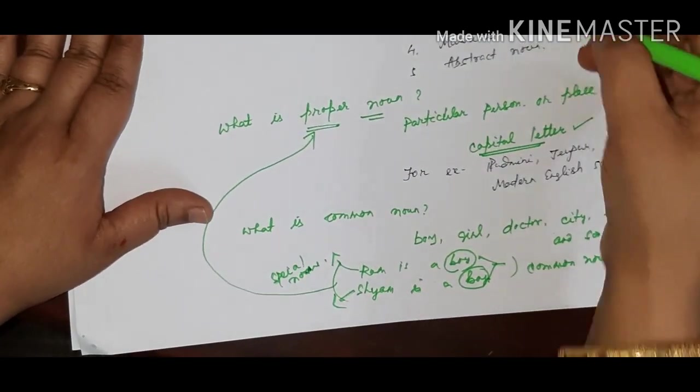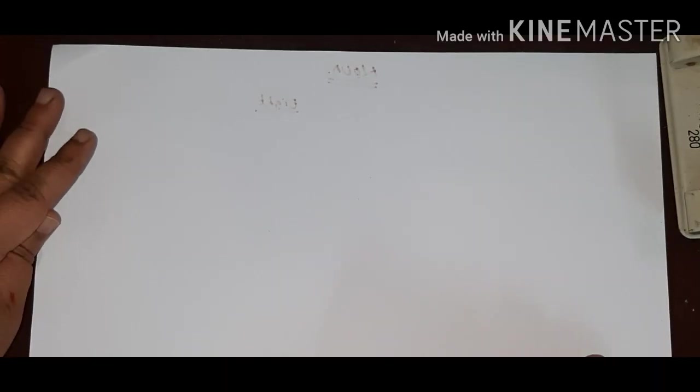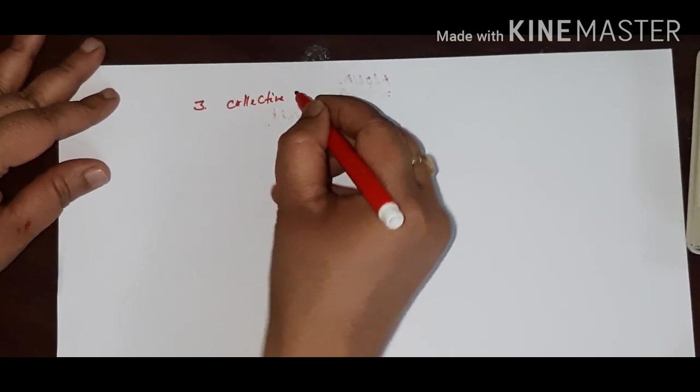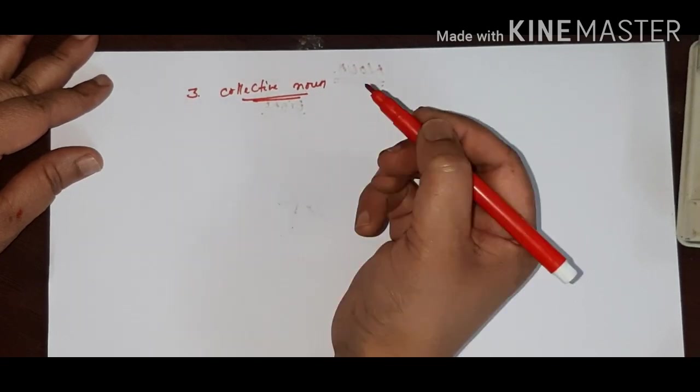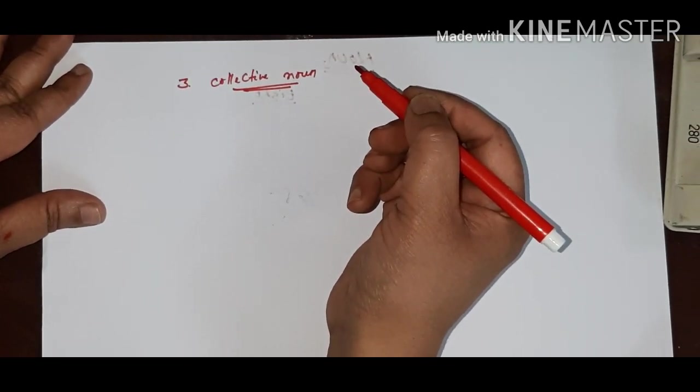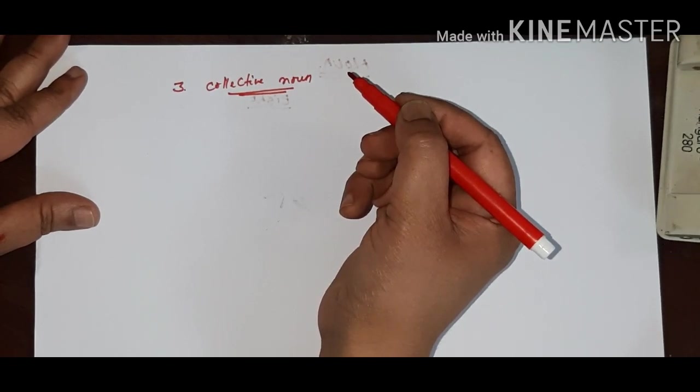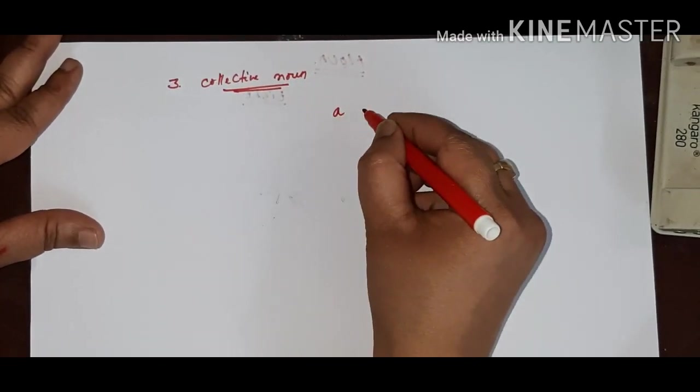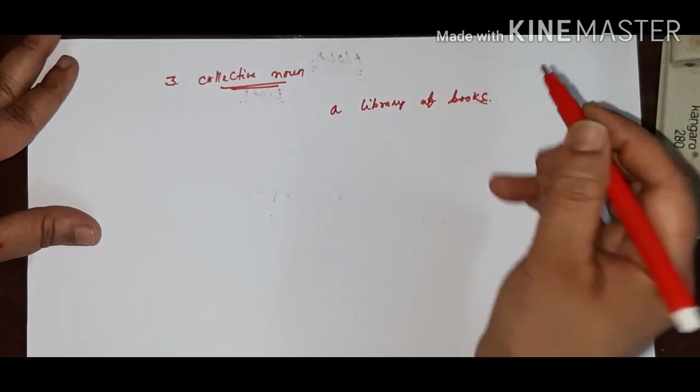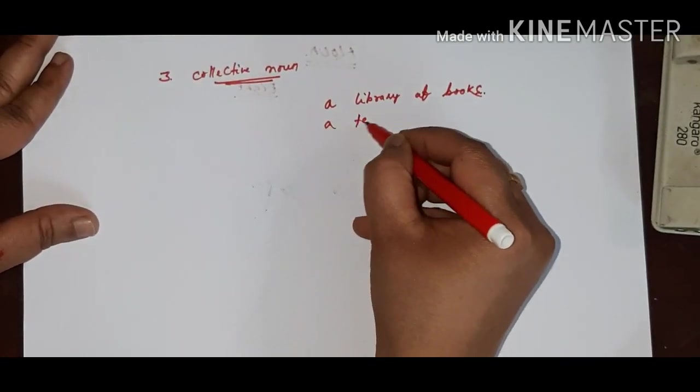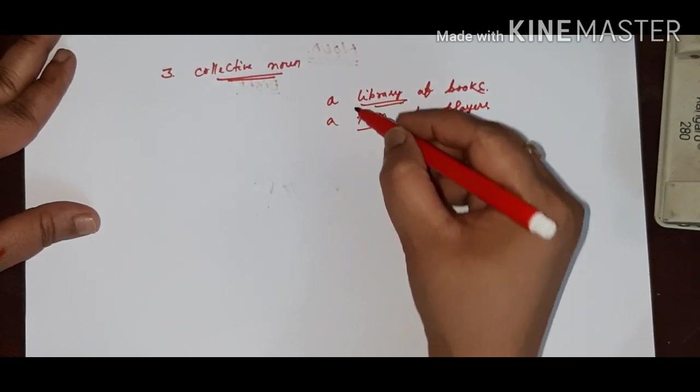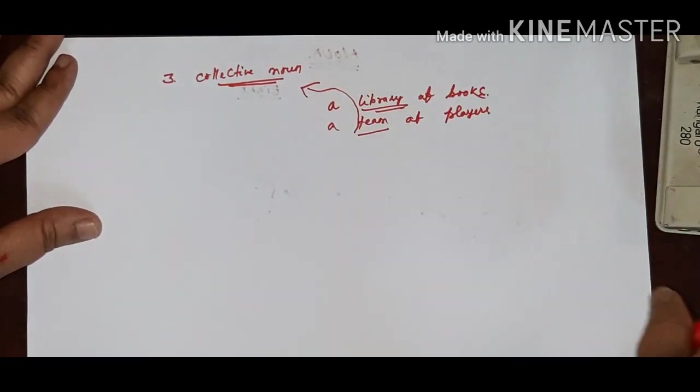Now we are going to discuss about the collective noun. What is a collective noun? Collective nouns are used to name a group of persons, places, animals, or things. A collective noun represents a complete whole children. For example, a library of books, a team of players. Here, library and team, both are known as the collective noun.